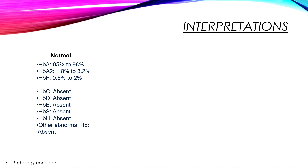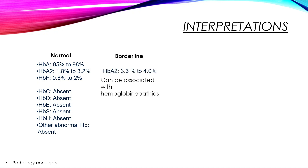Now let's understand the reference values in a normal HPLC. HbA is between 95 to 98%, HbA2 is 1.8 to 3.2%, HbF is 0.8 to 2%, and all other abnormal hemoglobins are absent. If HbA2 is elevated and lies between 3.3 to 4.0%, it is called borderline elevated HbA2, which can be associated with hemoglobinopathies.